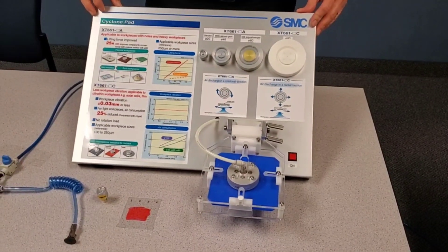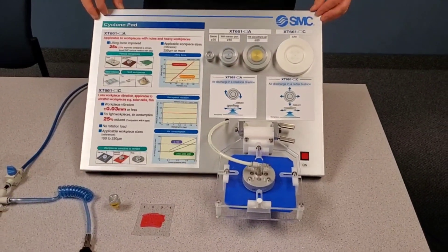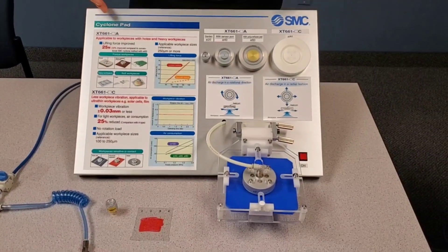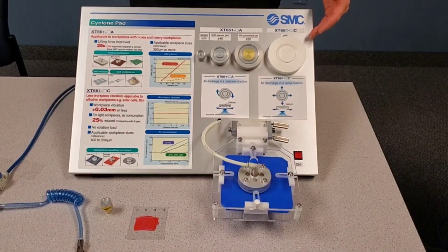This is our non-contact gripper or mark-free vacuum pad. Sometimes we call it a cyclone pad, other people call it a Bernoulli.